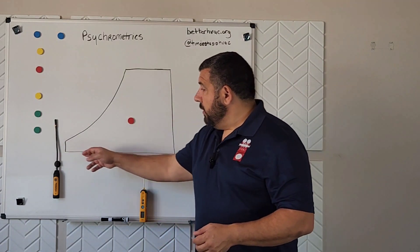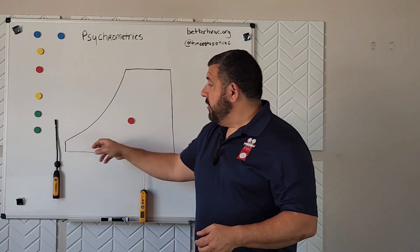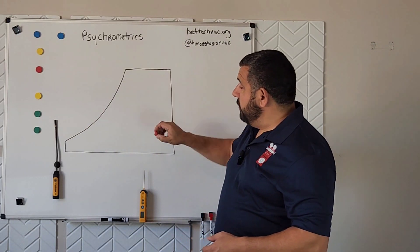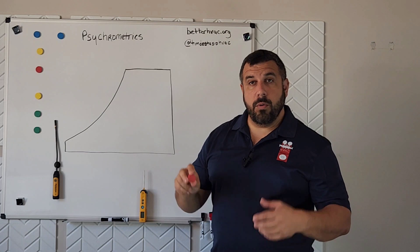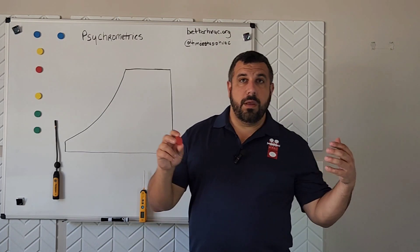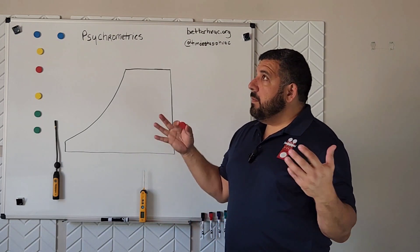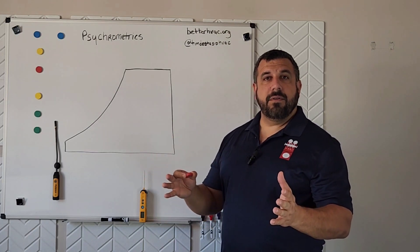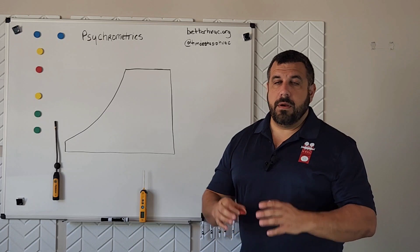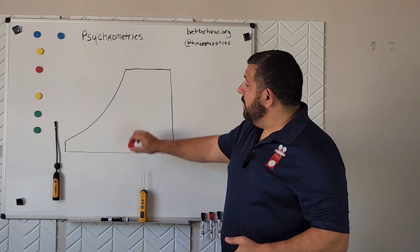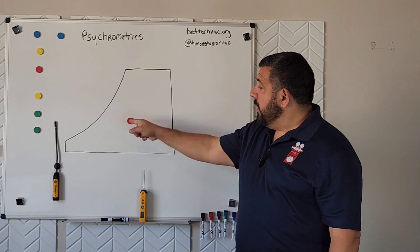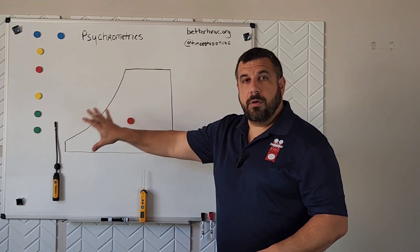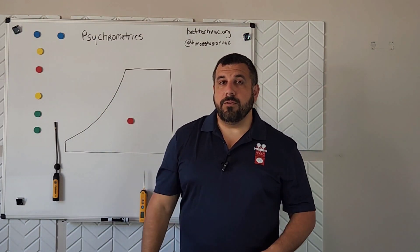The psychrometric chart really represents a window in which the air that we're in can be — it can be anywhere in this window. This little red dot represents what we call the operating point, or pretty much the conditions of the air that we are in right now. Here I am inside my own house. It's very comfortable in here, and typically we are comfortable around 70 to 75 degrees and around 50% relative humidity. In the chart, that range is sort of right in the middle, and that makes sense. The farther we get from the middle, the closer we get to the edges, the more extreme the conditions are going to be.